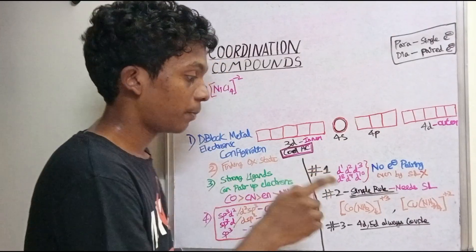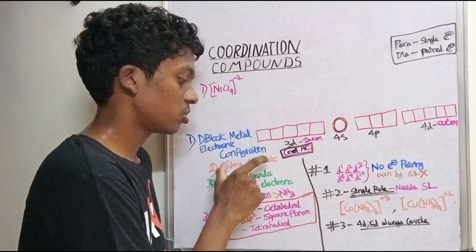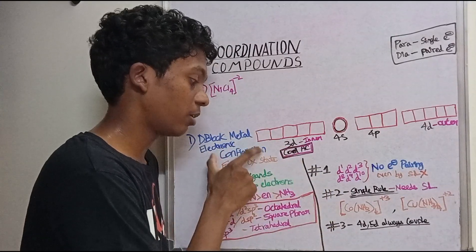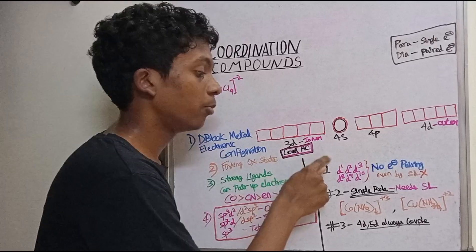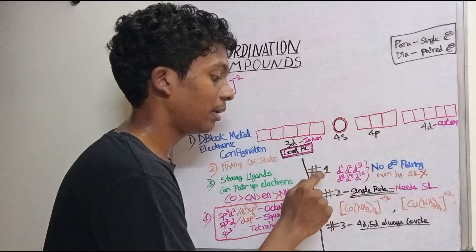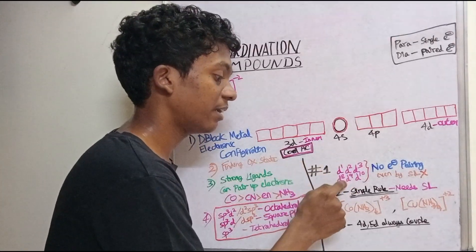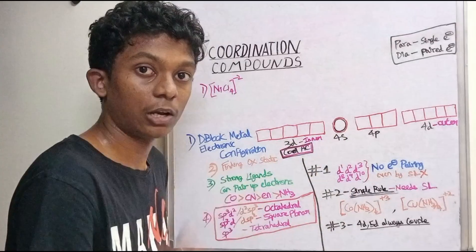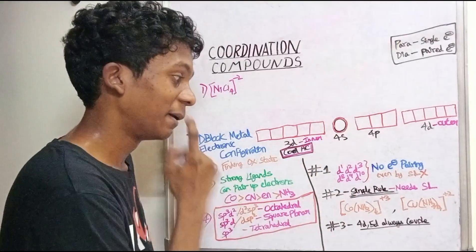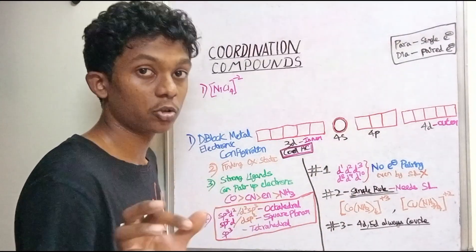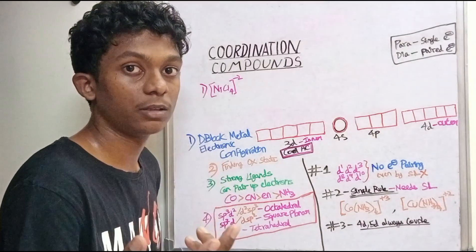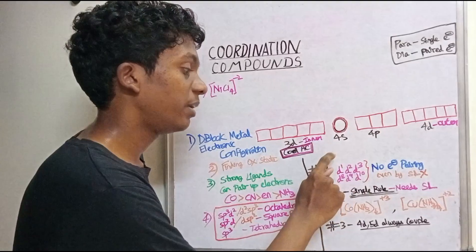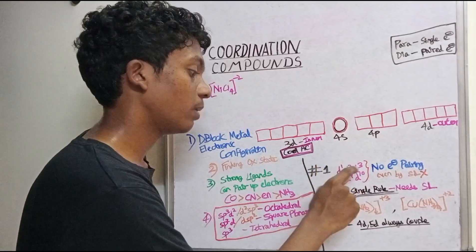Now, using the oxidation state to find the electronic configuration: D1, D2, D3 and D8, D9, D10 configurations are exceptional cases. We will compare these. Strong ligands usually pair electrons, but for D1, D2, D3 and D8, D9, D10 it is a special case.